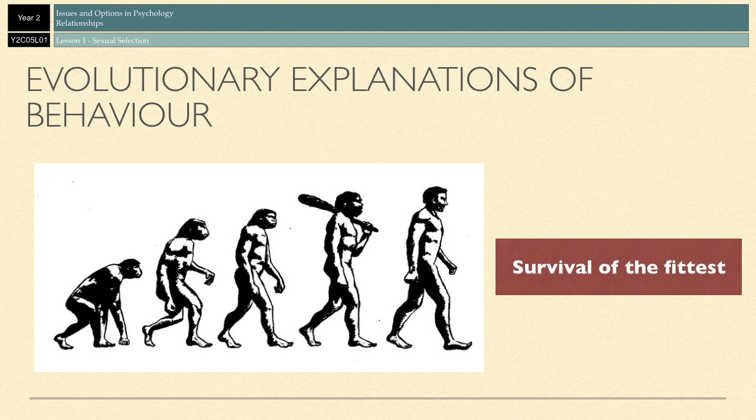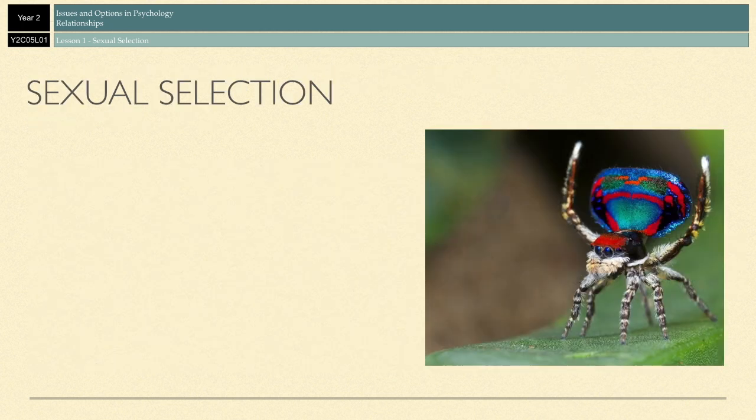Sexual selection as a theory explains the evolution of characteristics that provide a reproductive advantage as opposed to a survival advantage. With natural selection, it's all about gaining attributes that help you to survive. Sexual selection, on the other hand, is all about having attributes that help you to reproduce.